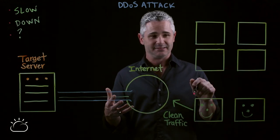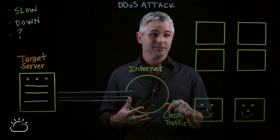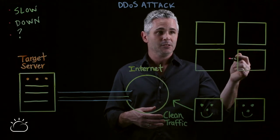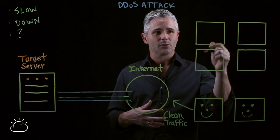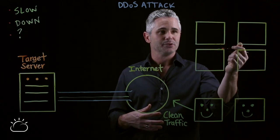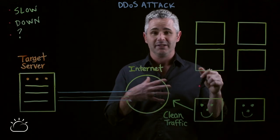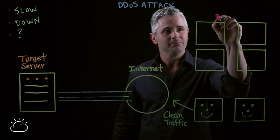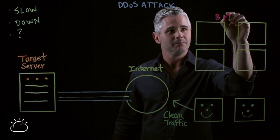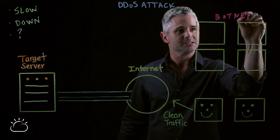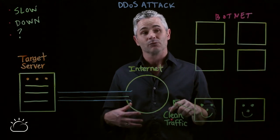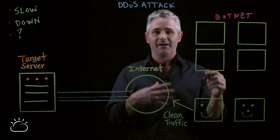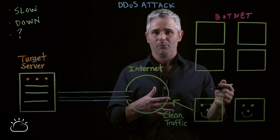Sometimes these might be IoT devices, they might be people's computers, they might be other servers on the internet. All of these compromised computers are at the control of the attacker, and we call that network a botnet. It's called a botnet because the attacker can remotely control this network of hacked computers almost like they're robots.